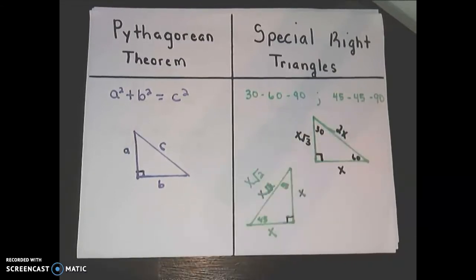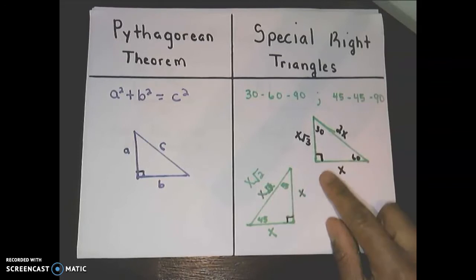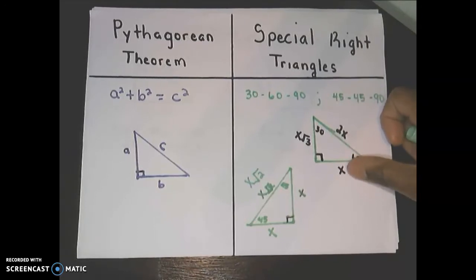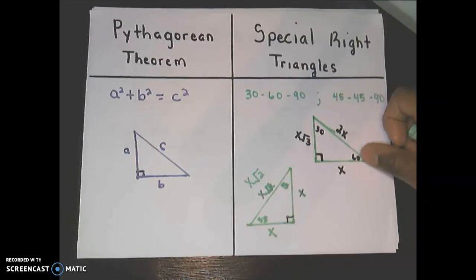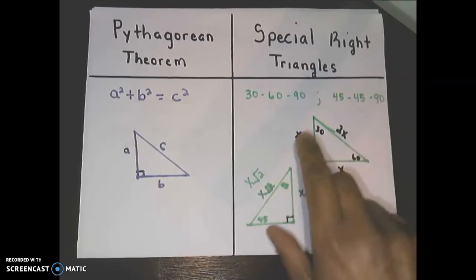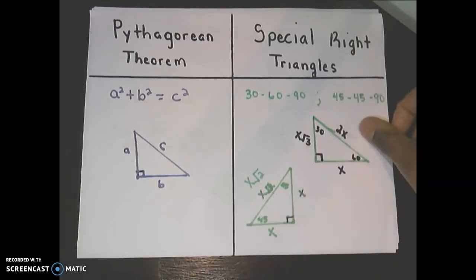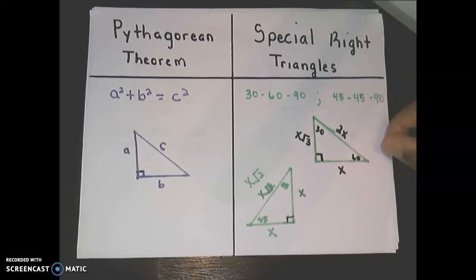For a 30-60-90 degree triangle, the smallest side is across from 30 and we call that value X. The next side, across from 60, gives us X times the square root of 3. To get the hypotenuse, we just double the smallest side, so that's 2X.